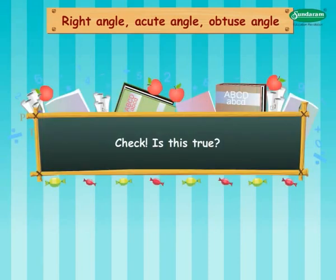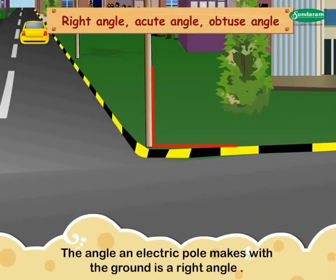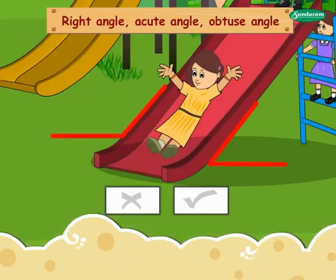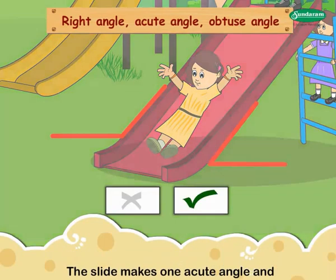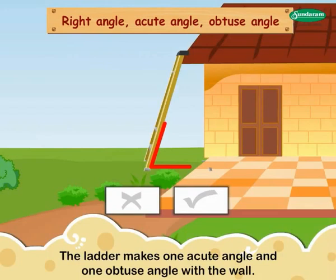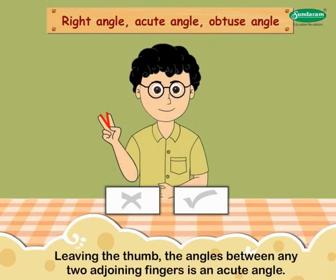Look at these examples and check — is this true? The angle an electric pole makes with the ground is a right angle. The slide makes one acute angle and one obtuse angle with the ground. The ladder makes one acute angle and one obtuse angle with the wall. Leaving the thumb, the angles between any two adjoining fingers is an acute angle.